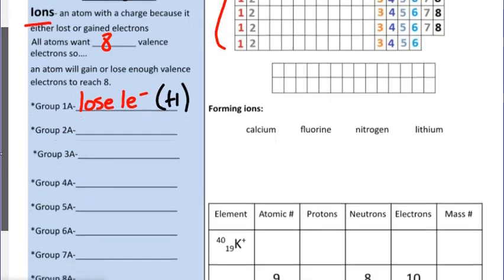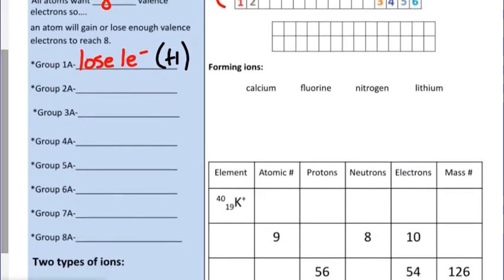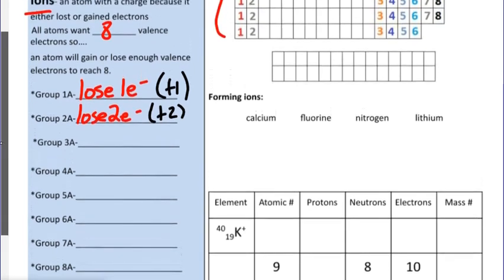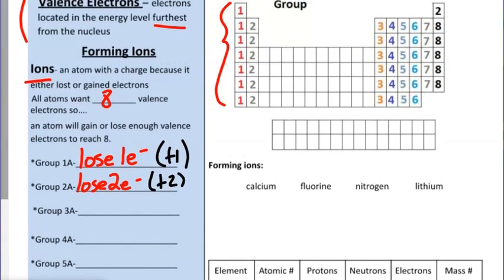The pattern for the rest of the groups follows the same logic. When we get to group 2A, they're going to lose their two valence electrons and as a result form a plus two charge. Right above group 2 on your periodic table, write plus two.